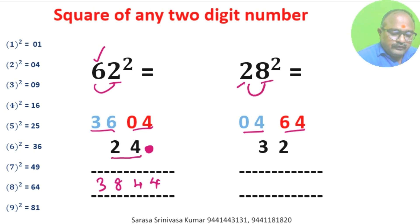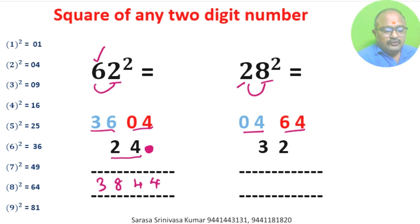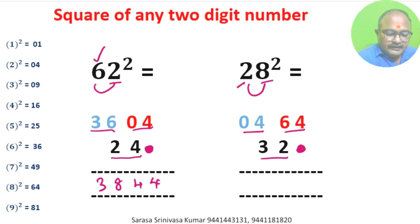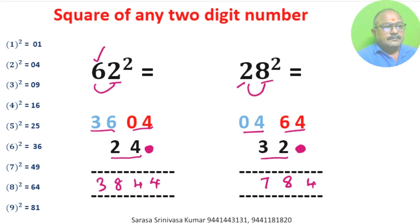28 square: square of 2 is 04, square of 8 is 64. We multiply: 2 into 8 is 16, double it — 16 into 2 is 32. In units place we don't write anything. 4, 6 plus 2 is 8, 4 plus 3 is 7. 784 is the answer.